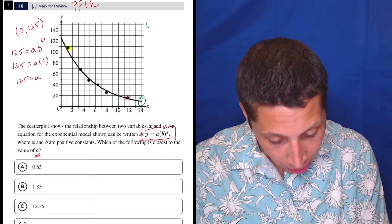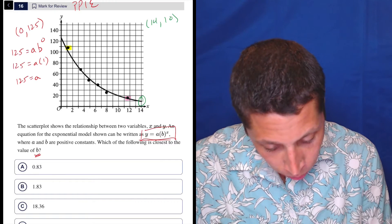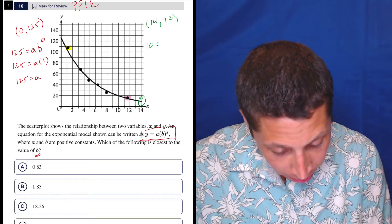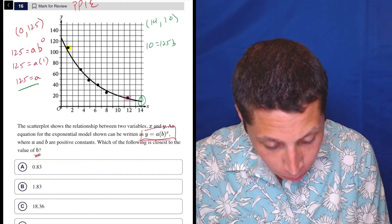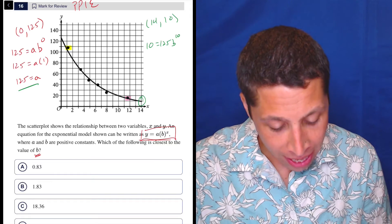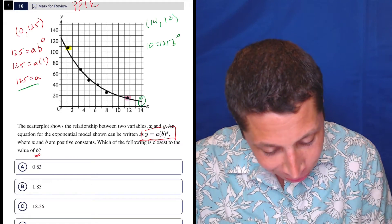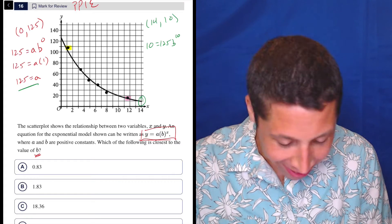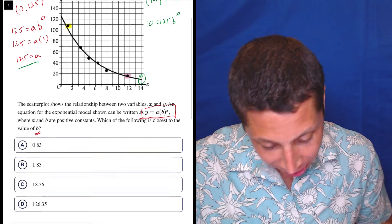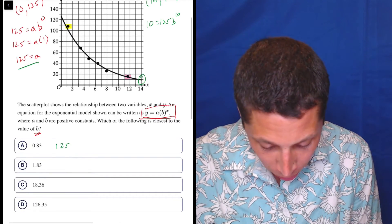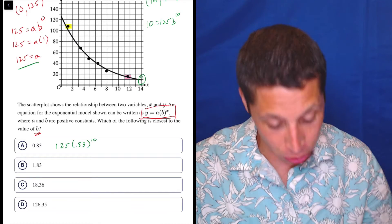So this is the point 14 and I don't know, it just looks like 10. So let's just go with that. So now 10 is my y. A we said is 125. We're copying that from here. We don't know b, but we know our exponent is 10. And as I'm doing this, I realize it's kind of stupid, but it's okay. We're going to basically at this point guess and check if we're going to do it this way. So that's okay. We can guess and check. So let's do 125 times 0.83 to the 10th.